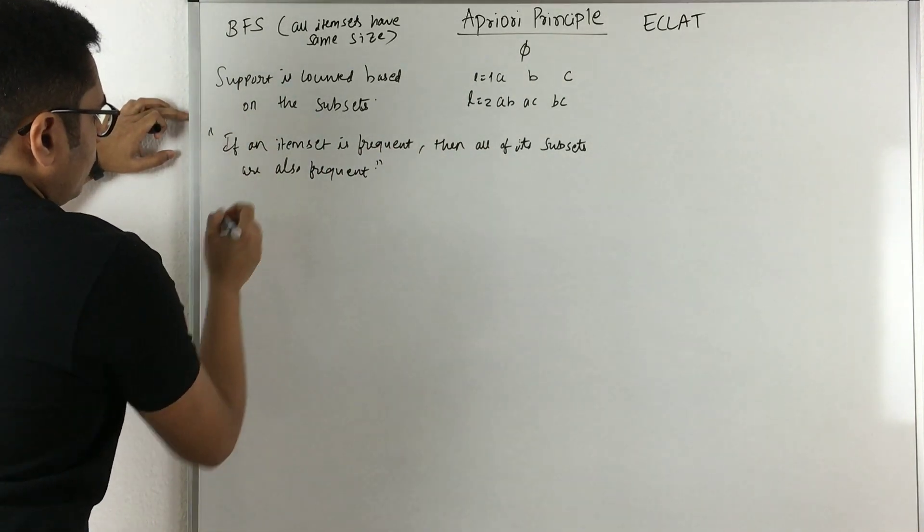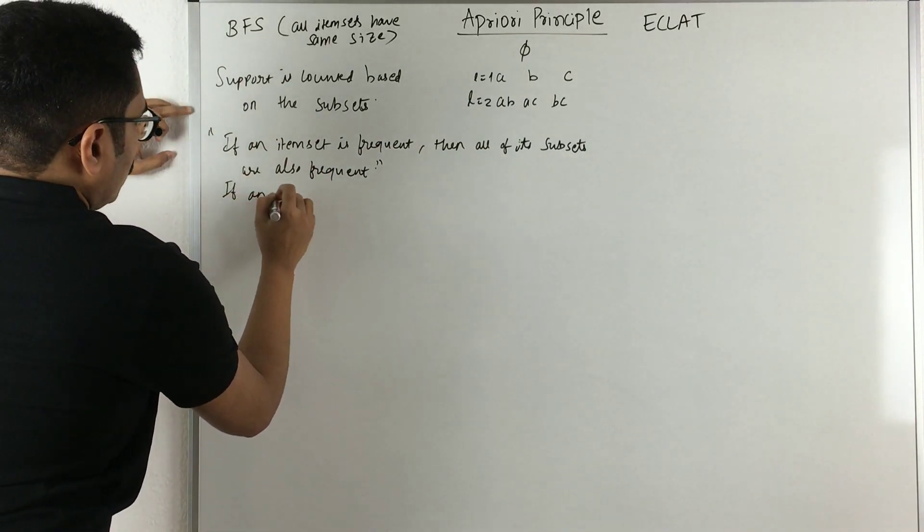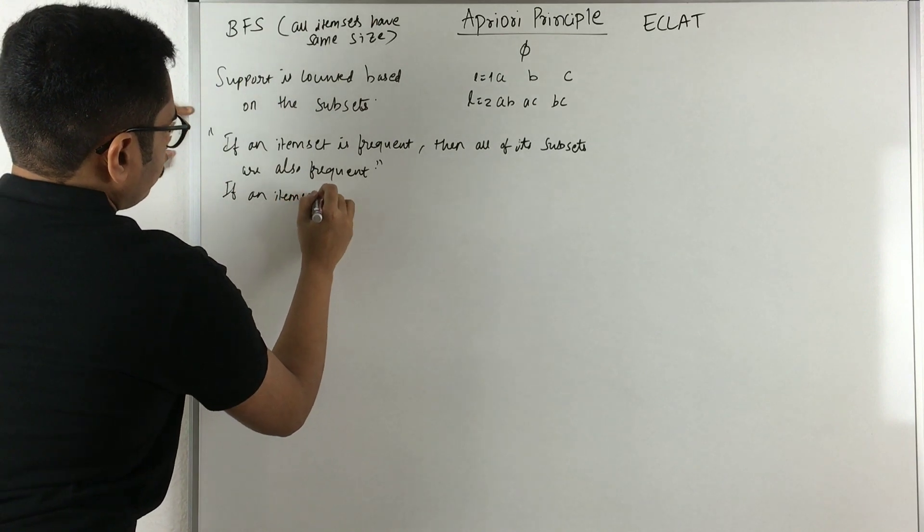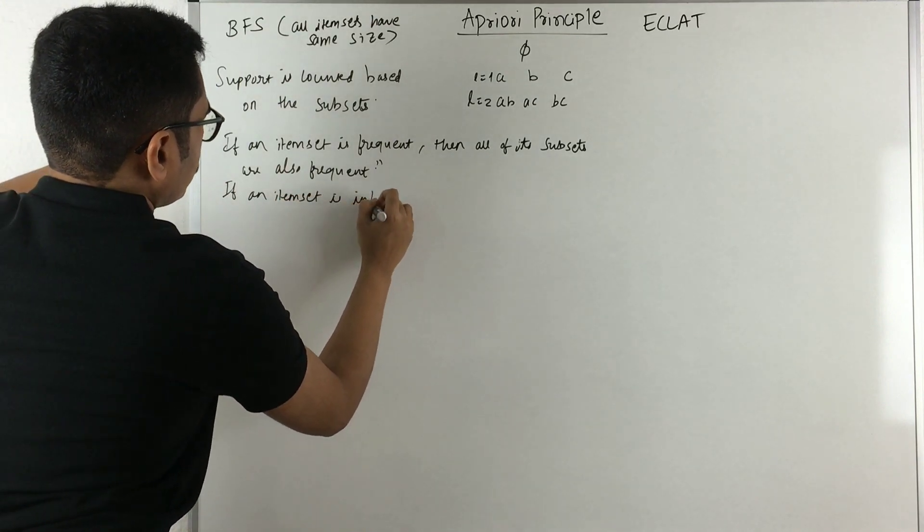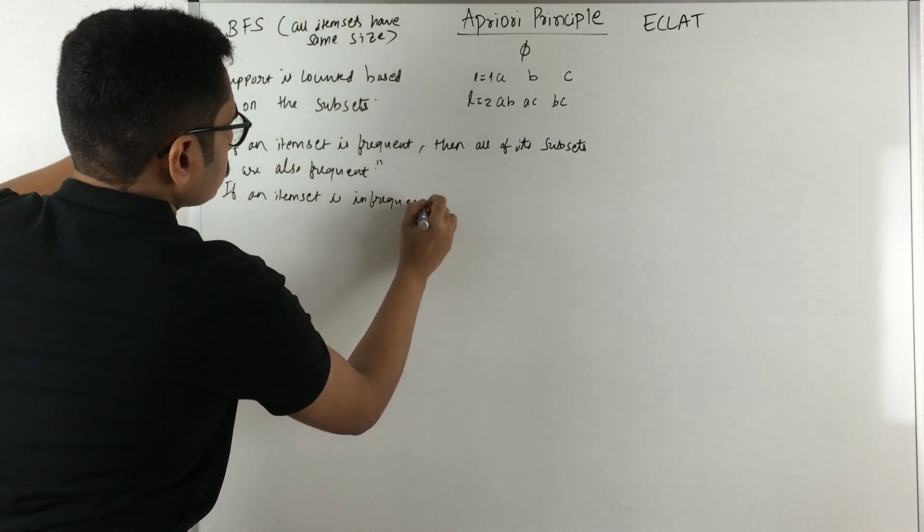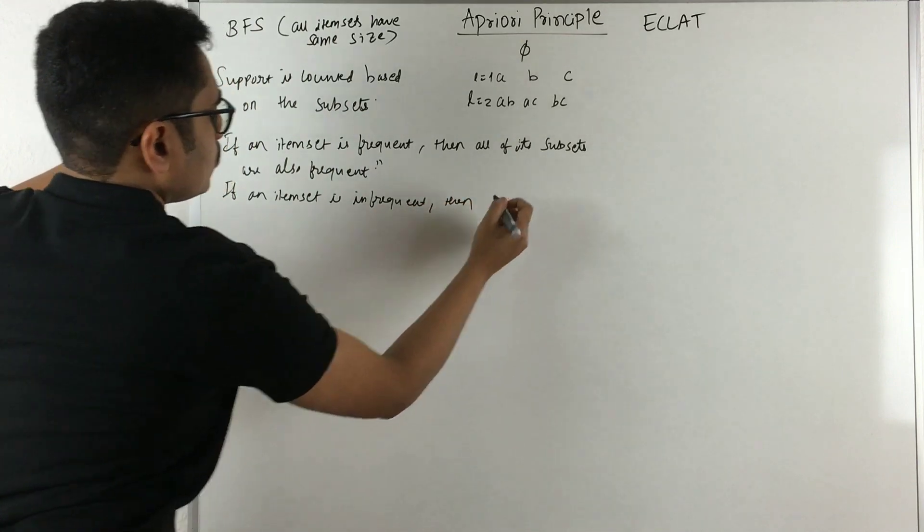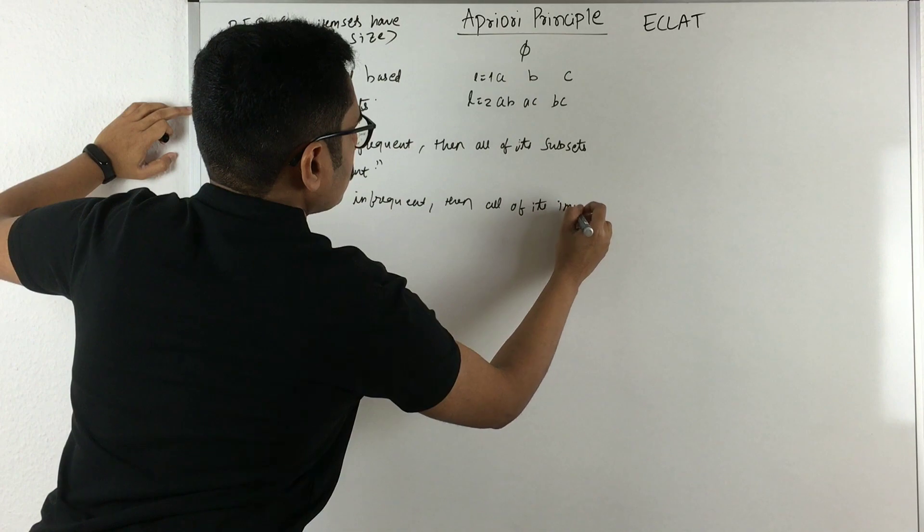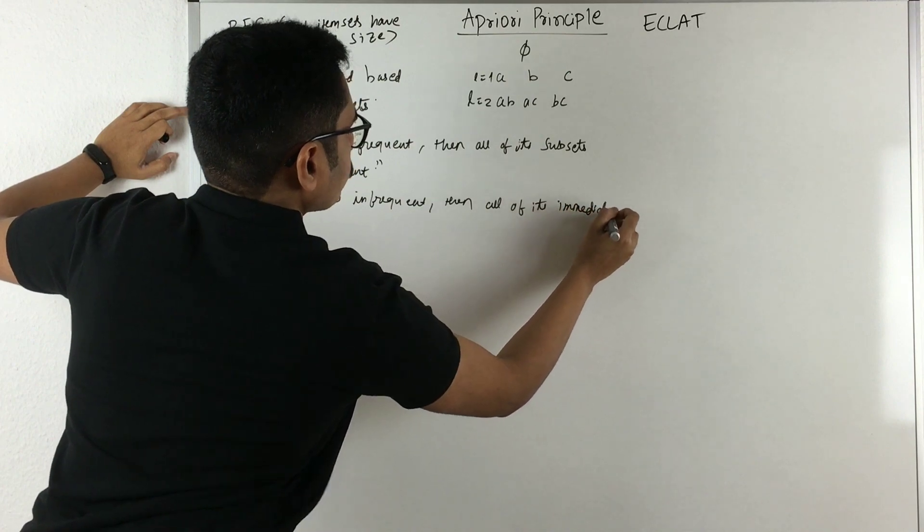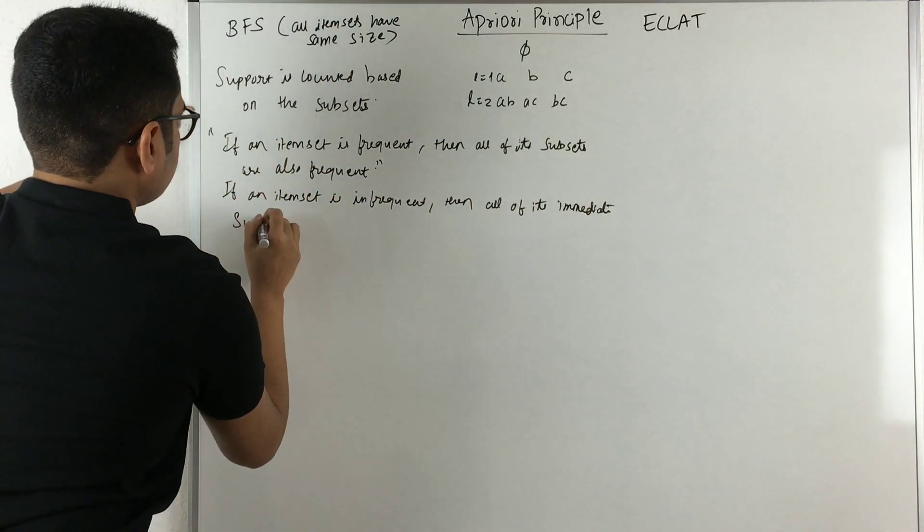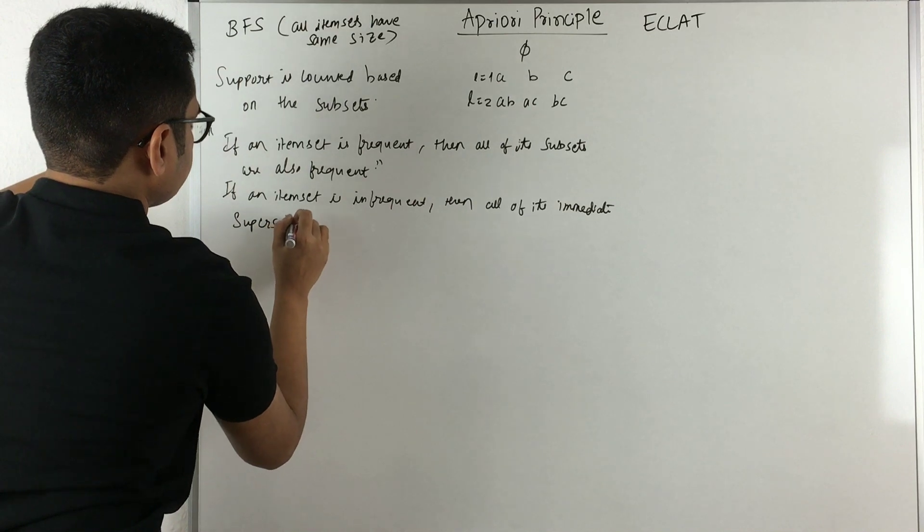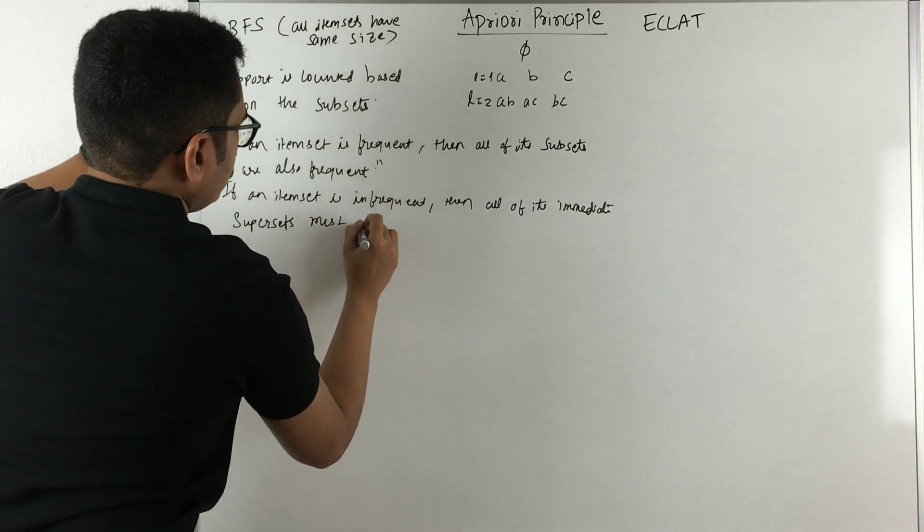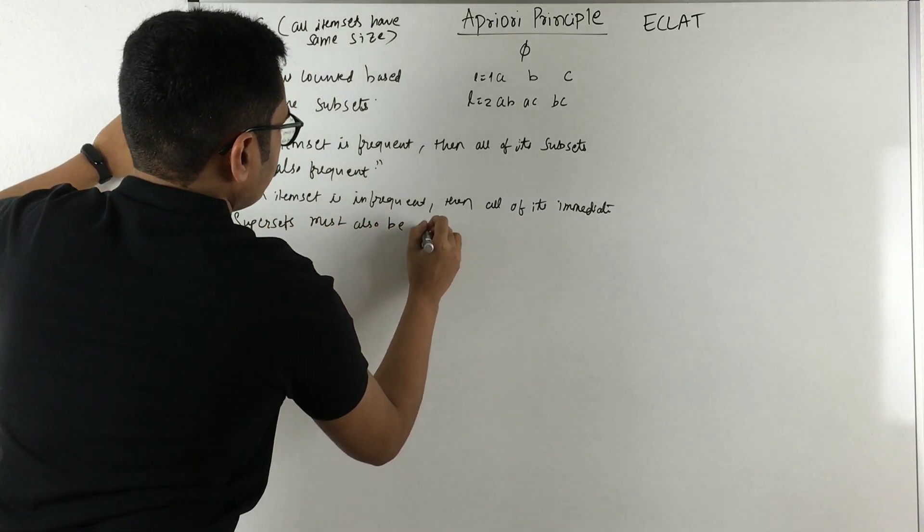Conversely, what we have is: if an item set is infrequent, then all of its immediate supersets must also be infrequent.